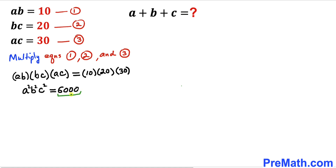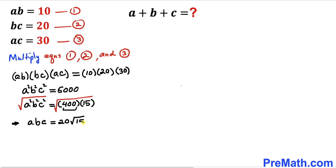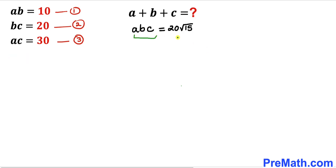Now let's tweak the right hand side. 6,000 can be written as 400 times 15, so a squared times b squared times c squared equals 400 times 15. Taking the square root of both sides, the squares cancel on the left, giving us a times b times c equals the square root of 400 times the square root of 15, which is 20 times the square root of 15.